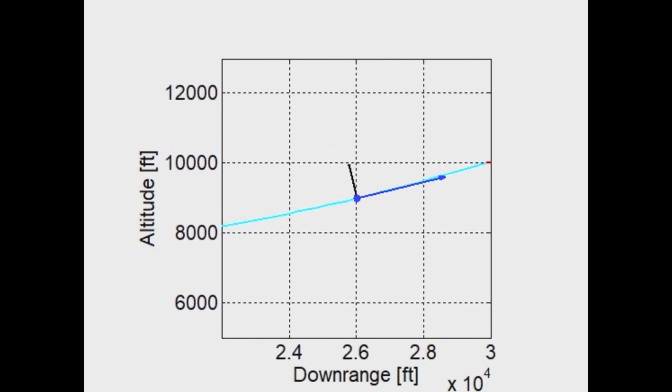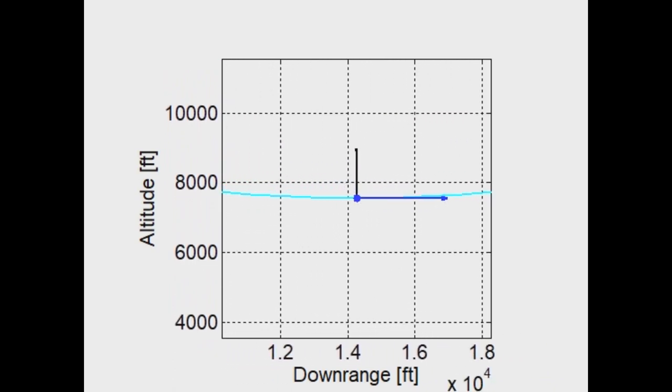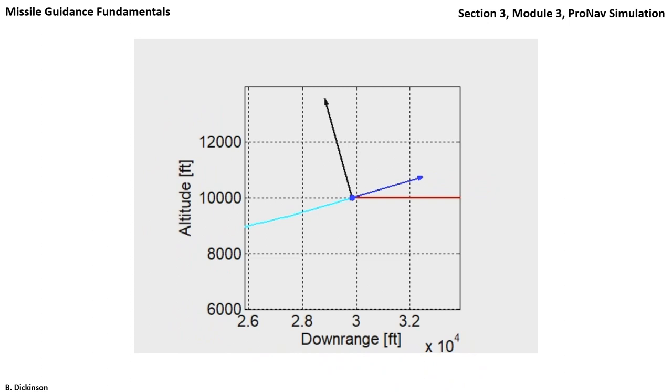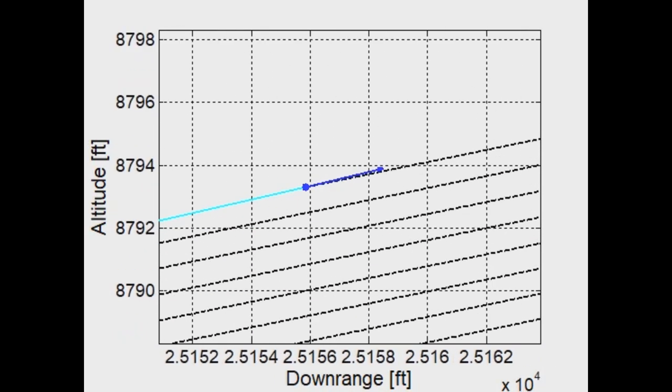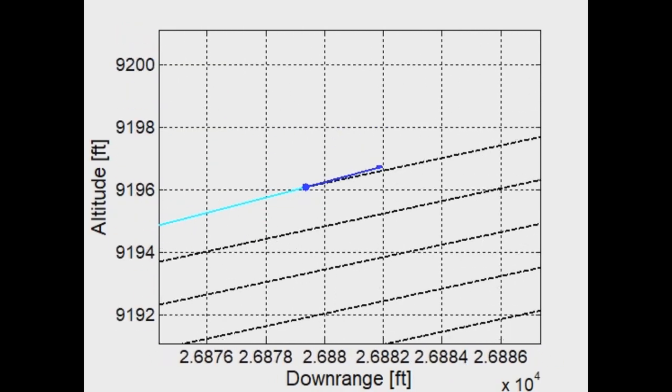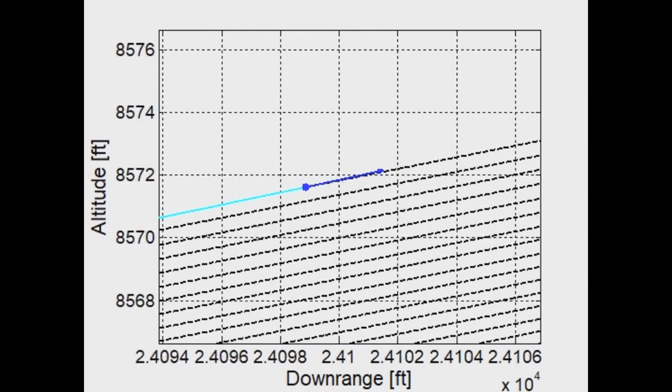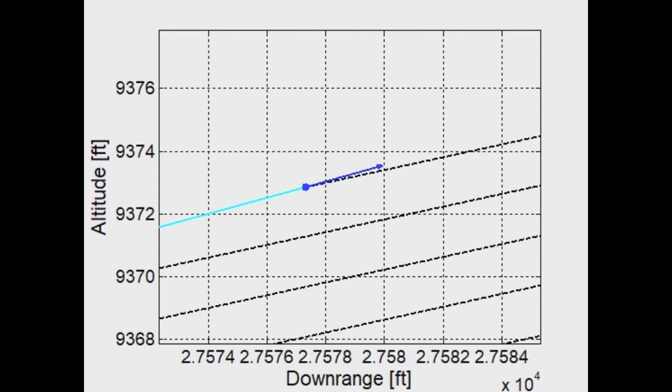As with true ProNav, we see the acceleration decrease as time increases. And as with true ProNav, we see a collision triangle being established as the range vectors become fixed with respect to one another as the pursuer approaches the target.